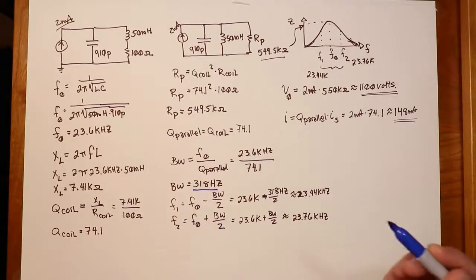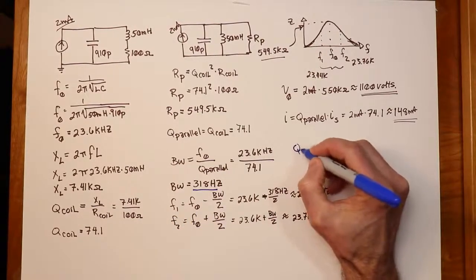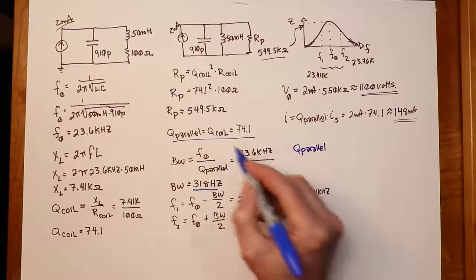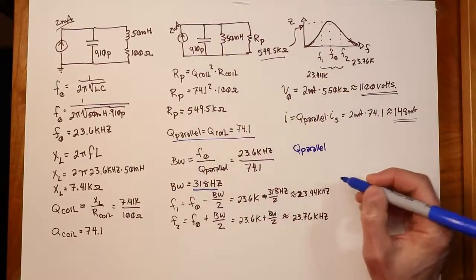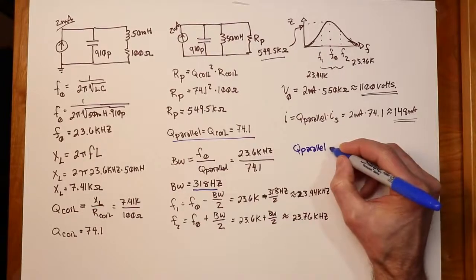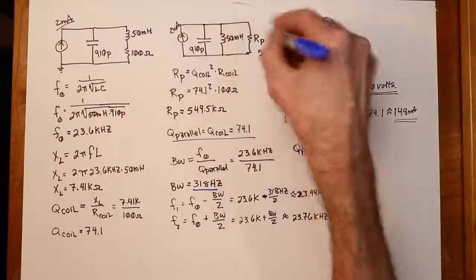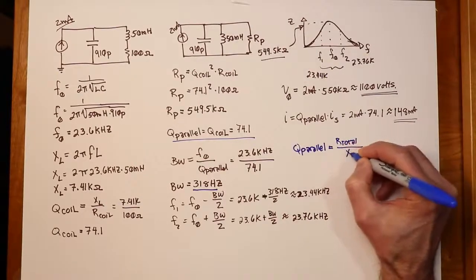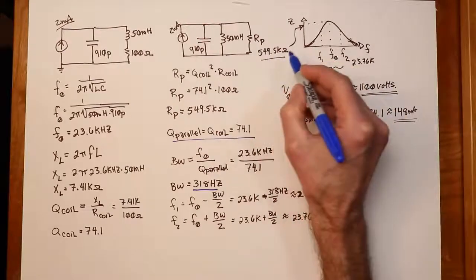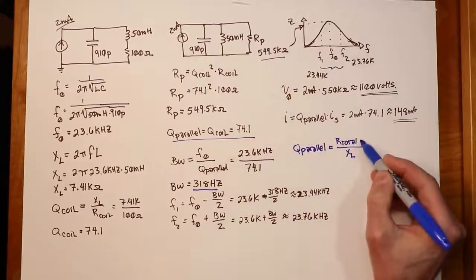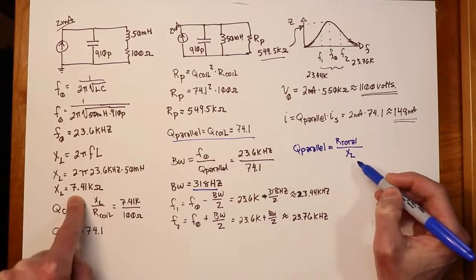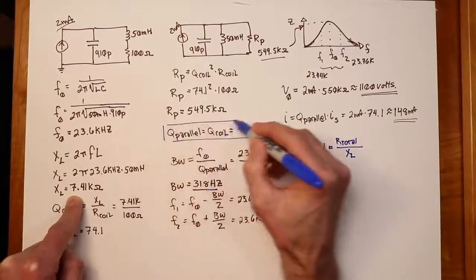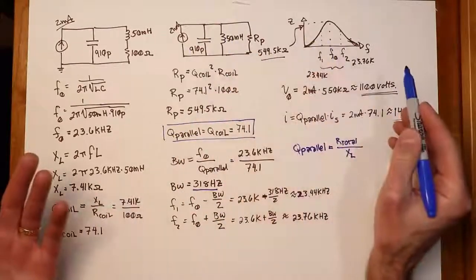Remember, although it's still true that Q coil is x sub l over R coil, we have to remember that for Q parallel, the general term for Q parallel, because this is a special case here, because we don't have an extra resistance, but the general case would be that Q parallel is your R total divided by your x sub l. So, in this case, it would be the 549.5k for your R total, divided by your x sub l of 7.41k. That would also get you 74.1. This is a special case, because we don't have any extra resistance.